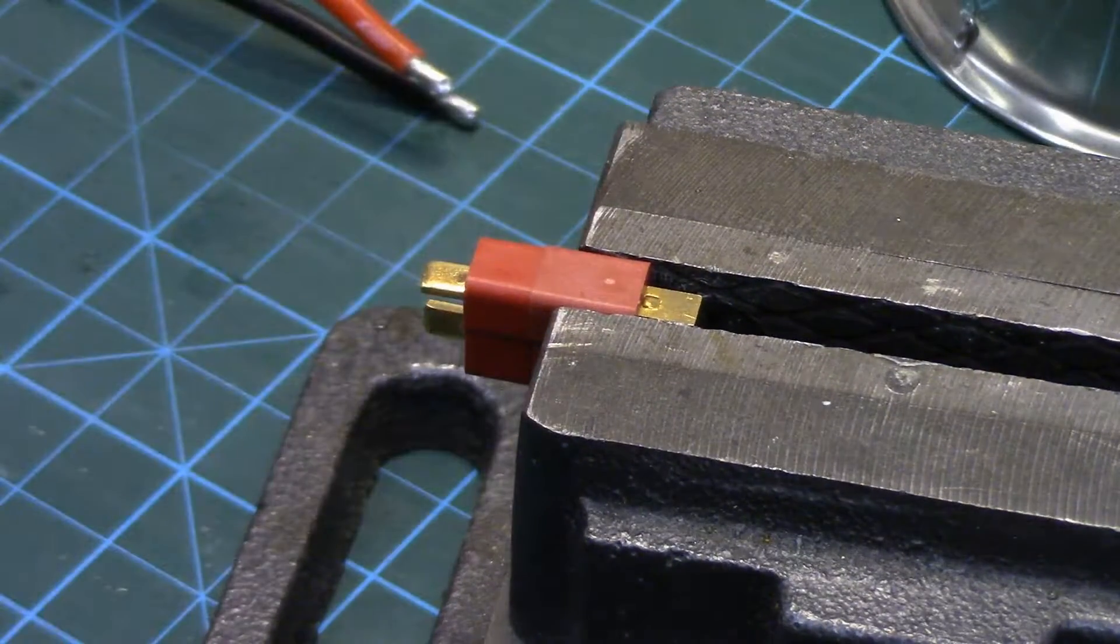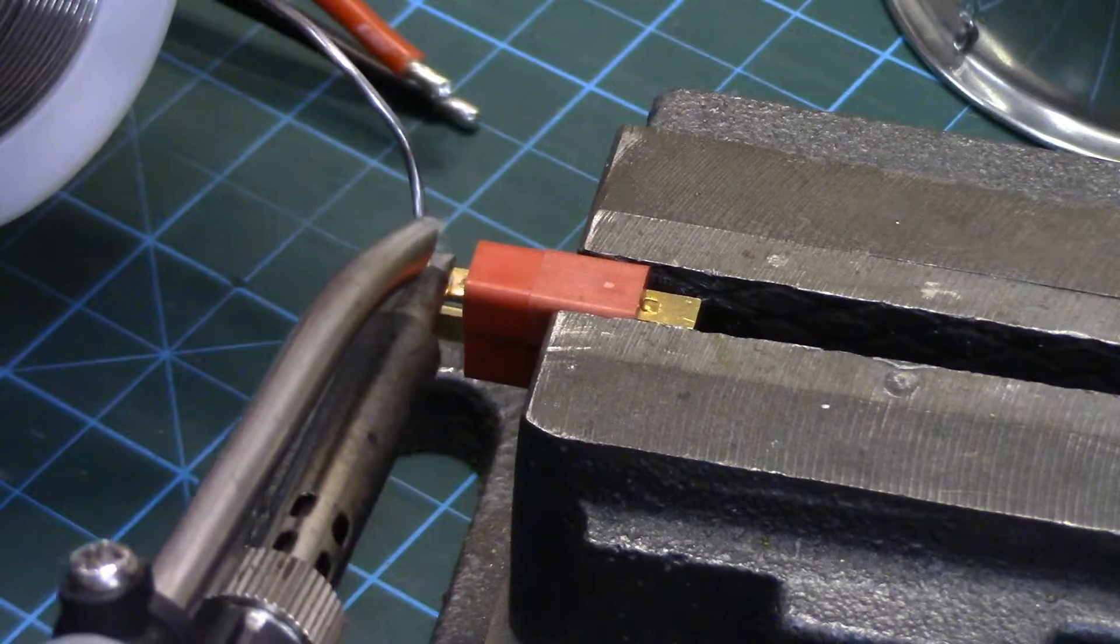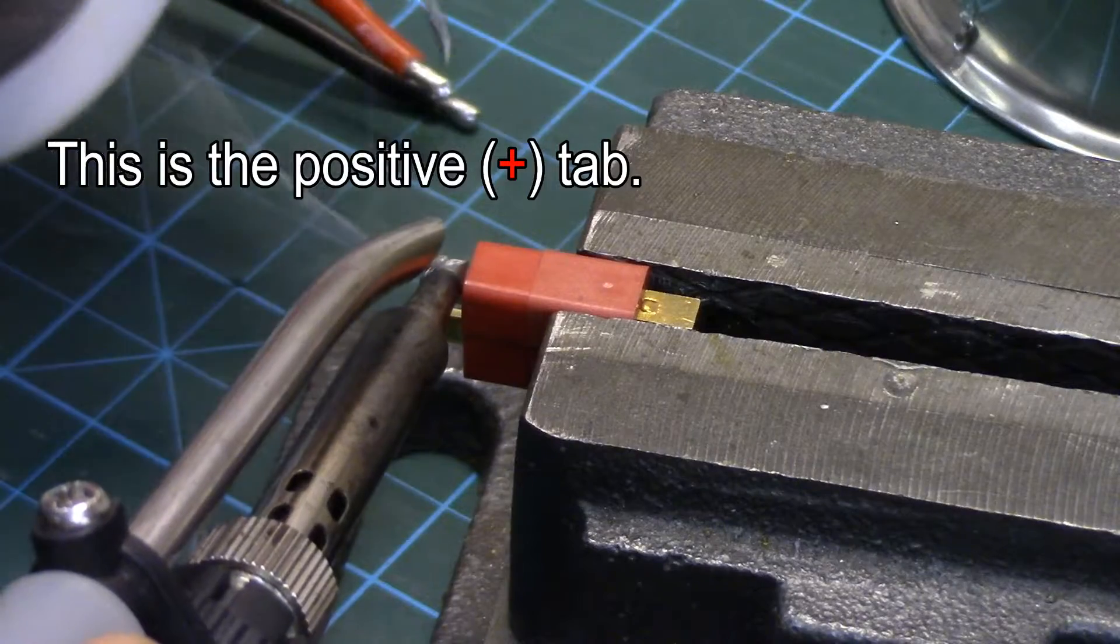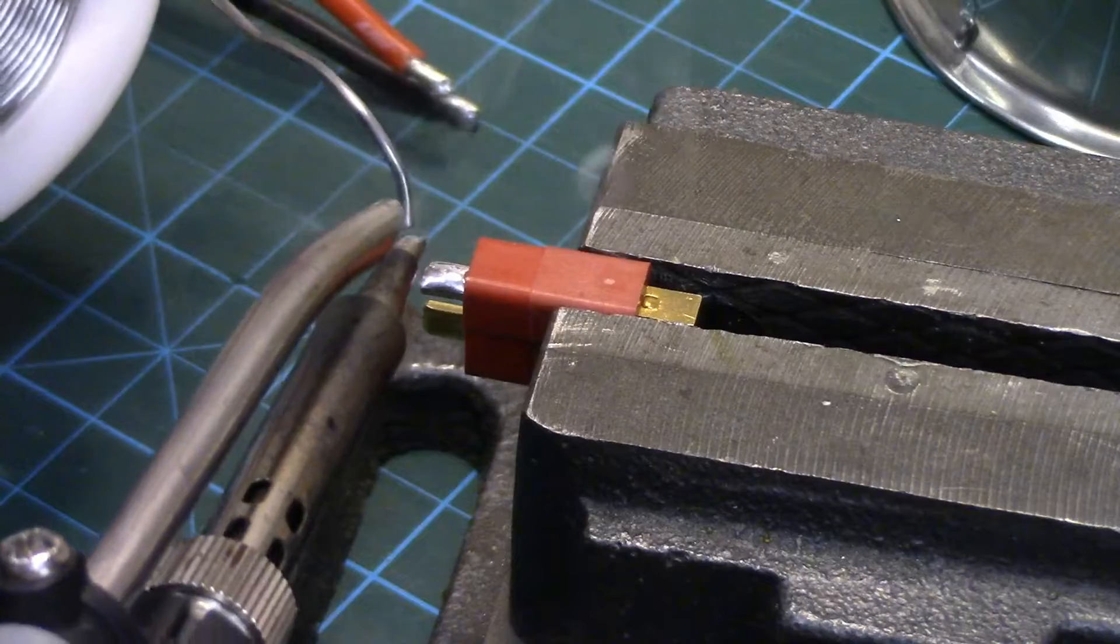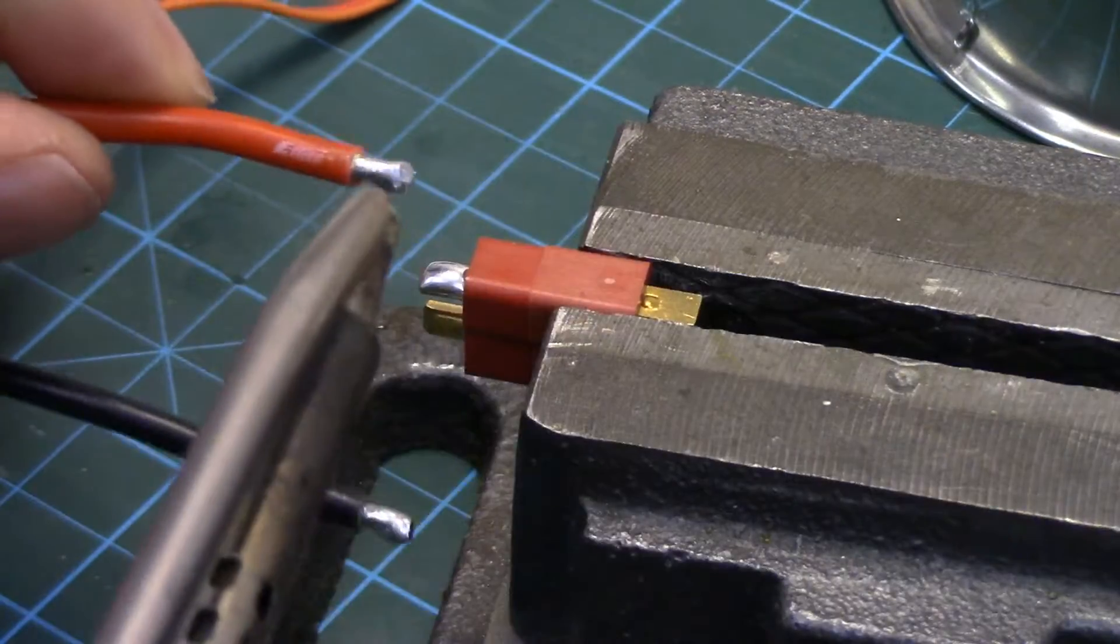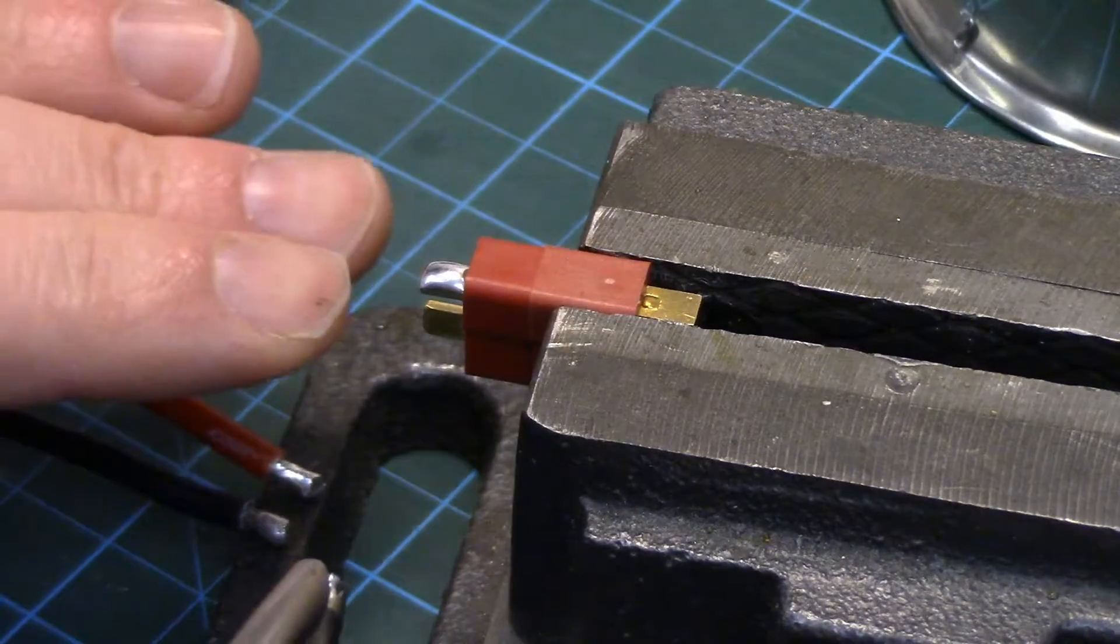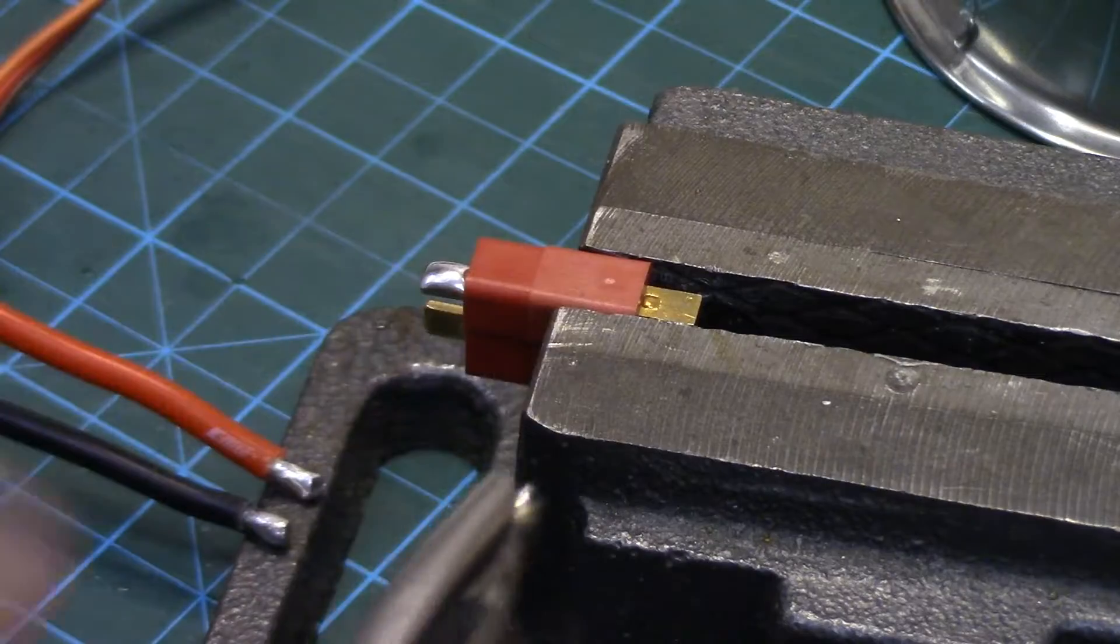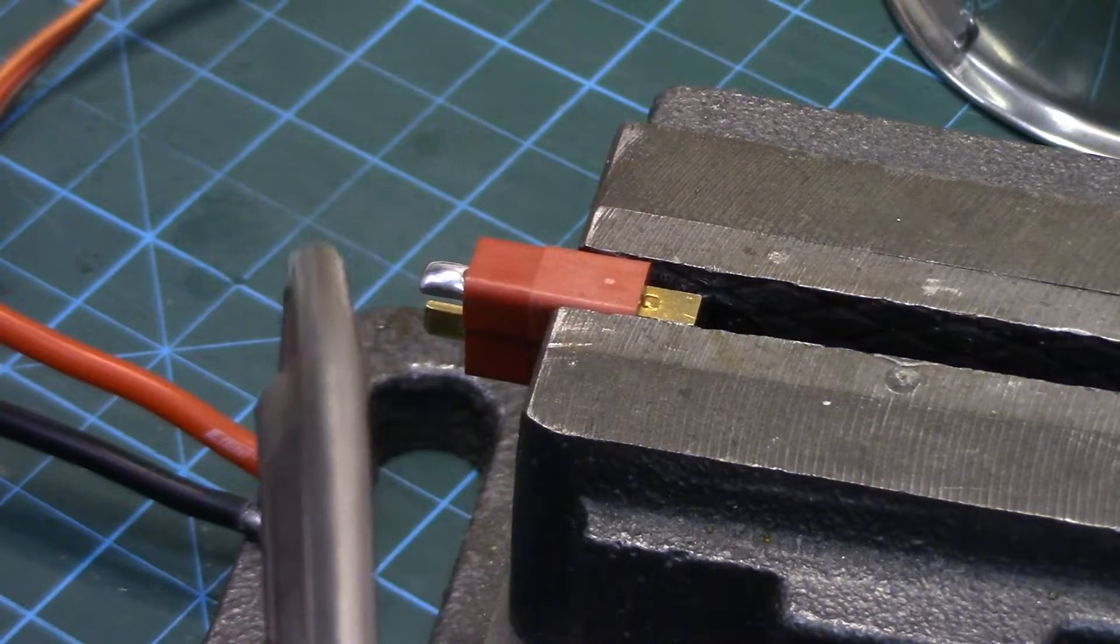Now first thing we're going to be doing is just tinning the tab on the Deans connector here, just get a nice layer of solder on there, you don't have to go too big, just a nice little bubble. The whole idea is we're going to be melting this tinned wire into that bubble. Remember I said these are quite susceptible to softening the plastic if you put the heat on for too long. I'm just using a chisel tip on the end, good heat conductivity.